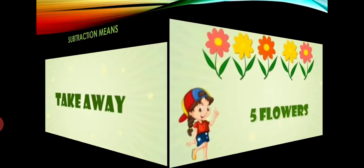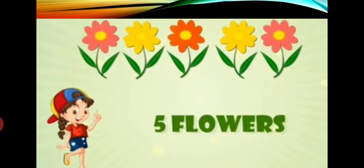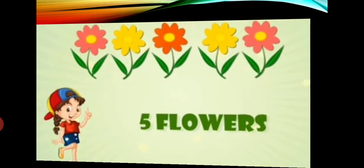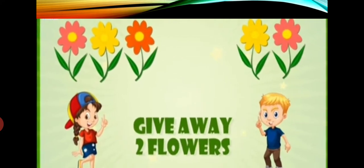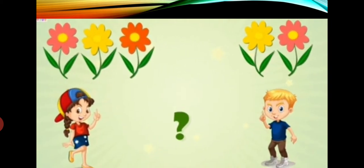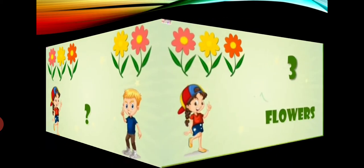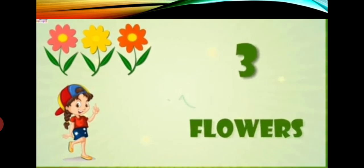For an example, if a girl is having 5 flowers and she gives 2 flowers to her friend, so how many flowers left with that girl? She was having 5 flowers and 2 flowers she has given to her friend. Now how many flowers left with the girl? Yes, 3 flowers. 5 minus 2 that is equal to 3. We use the symbol minus for showing the subtraction.